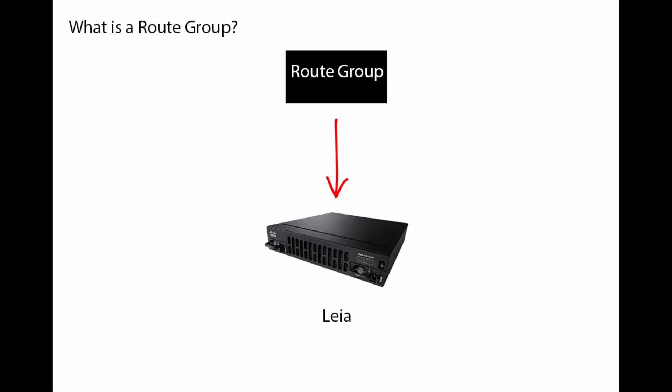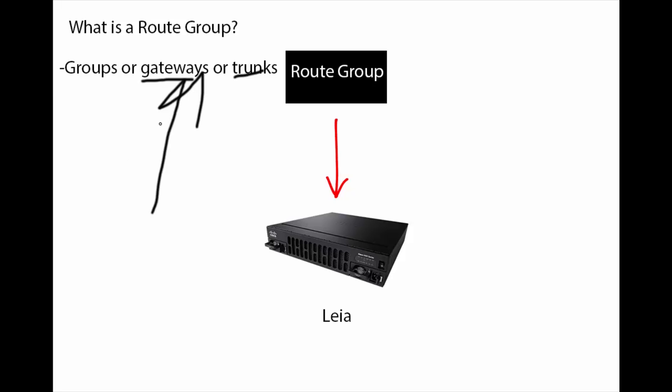So what is a route group? They are essentially just a group of gateways and trunks. One thing about this route group, route list, route pattern situation is that you can bypass the entire hierarchy. You can actually have just the route pattern go directly to a gateway or a trunk. So you configure your pattern and go directly to one of these devices. You don't have to worry about the whole route group or route list thing at all.